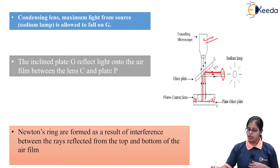Newton's rings obtained with reflected light consist of alternate bright and dark rings, with the central spot being dark, as is characteristic of the reflected system. If we consider dn as the diameter of the nth dark ring, then as per Newton's rings concept the diameter of the nth dark ring satisfies the condition: dn² = 4nRλ. This is the condition written for the diameter of any dark ring.